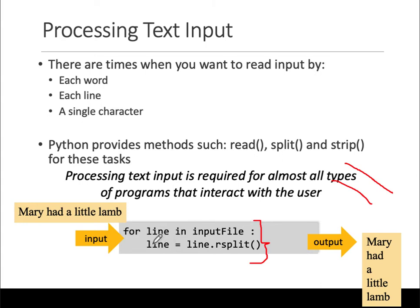Then do something — that line variable has a dot rstrip method, meaning if the line was written like this, it will split the line based on spaces. rstrip basically reads from one space to the other. So 'Mary had a little lamb' will be five strings.